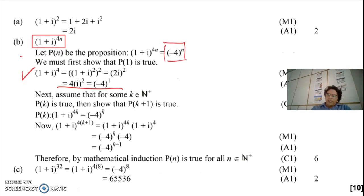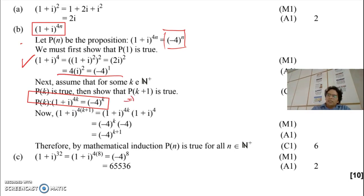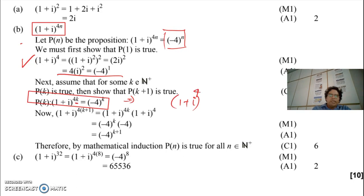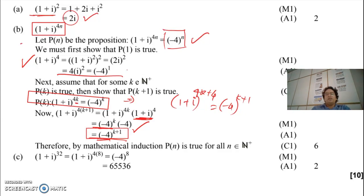Looking at the assumption for n equals k: we assume (1+i)^(4k) = (−4)^k. Now proving for n equals k plus 1 — the statement to prove is (1+i)^(4(k+1)) = (−4)^(k+1). We use the assumption (1+i)^(4k) = (−4)^k, then multiply both sides by (1+i)^4 = −4, collecting them together to get (−4)^(k+1).